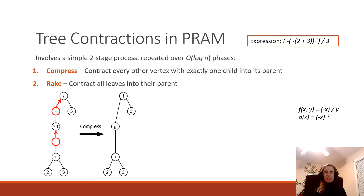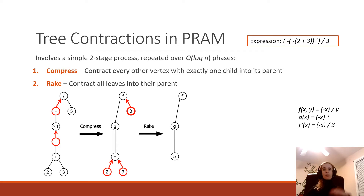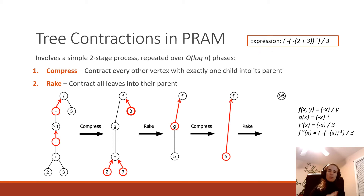In rake, we simply contract all leaves into their parents. In this example, rake consists of inputting arguments into functions: we replace 2 + 3 with 5, and we input 3 into the second argument of f to yield f′, which is just −x/3 — now a unary operator. We can imagine continuing this process until we complete and find our answer for the evaluation of the expression.